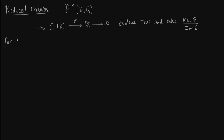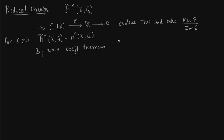Precisely as in reduced homology, for n greater than 0 there is absolutely no change: the reduced cohomology groups are the same as the cohomology groups. The difference arises only in dimension 0. By the Universal Coefficient Theorem, which we showed on the previous slide, we have the corresponding equality. For n greater than 0, the homology theory carries over directly to cohomology theory.